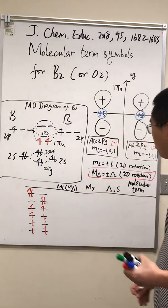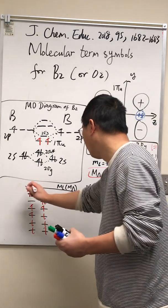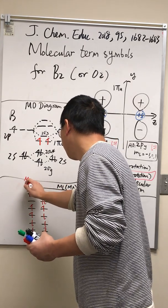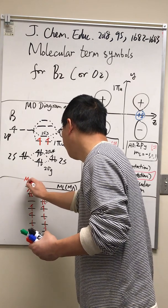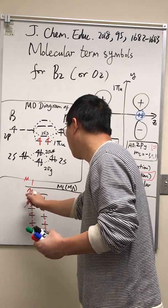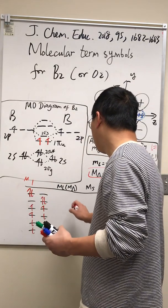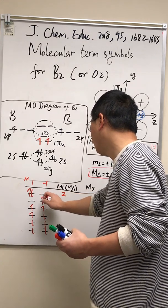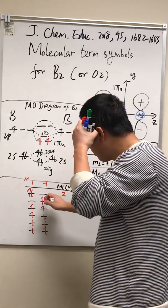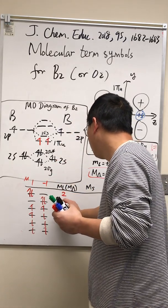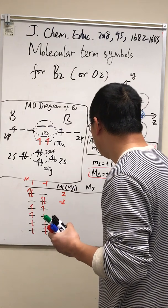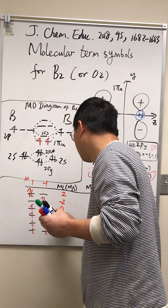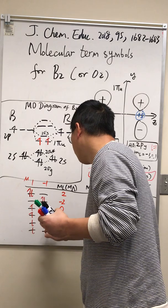And then we can fill out this table here for B2. We have quantum number m lambda here for this orbital, let's say one. We have two electrons here, so we put two electrons here. That means this is two. And then we have two electrons in this orbital with each with a z component of negative one, so minus two. And over here, plus one minus one is zero. Plus one minus one, zero. Plus one minus one is zero. Plus one minus one is zero.